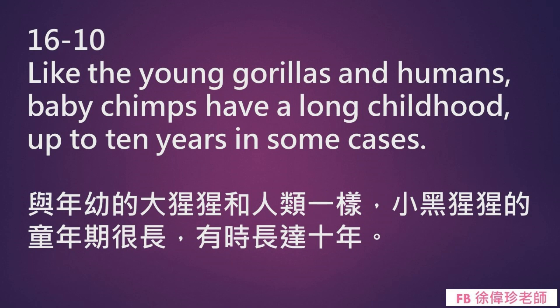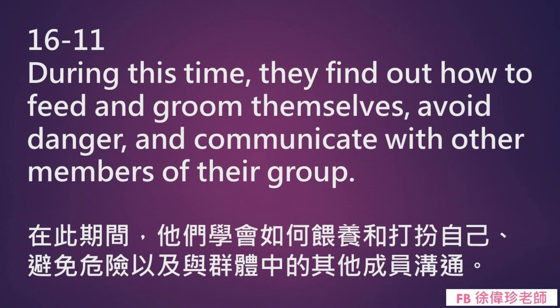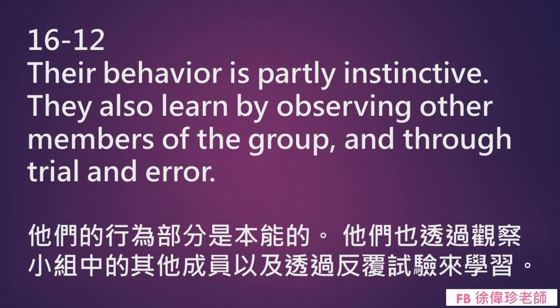Like young gorillas and humans, baby chimps have a long childhood, up to ten years in some cases. 与年幼的大猩猩和人类一样，小黑猩猩的童年期很长，有时长达十年。 During this time, they find out how to feed and groom themselves, avoid danger, and communicate with other members of their group. 在此期间，他们学会如何喂养和打扮自己，避免危险，以及与群体中的其他成员沟通。 Their behavior is partly instinctive. They also learn by observing other members of the group and through trial and error. 他们的行为部分是本能的，他们也通过观察小组中的其他成员以及通过反复试验来学习。